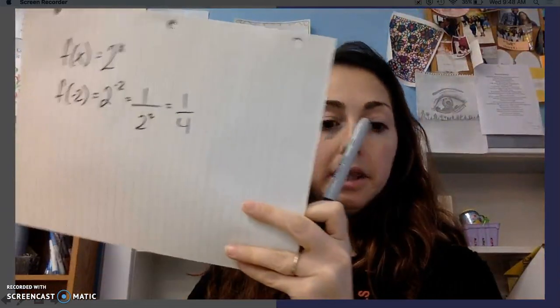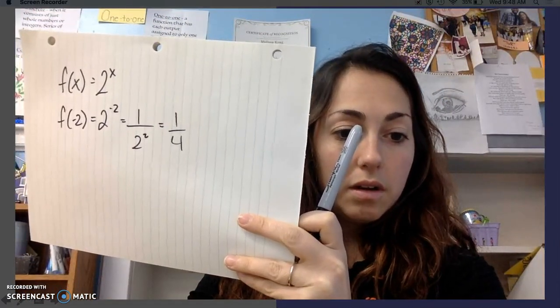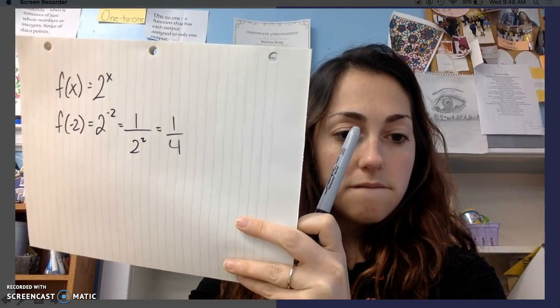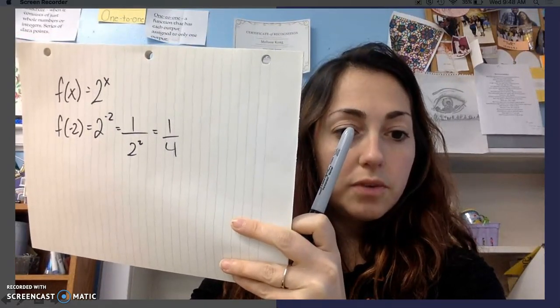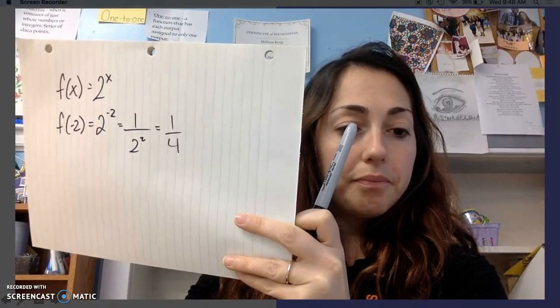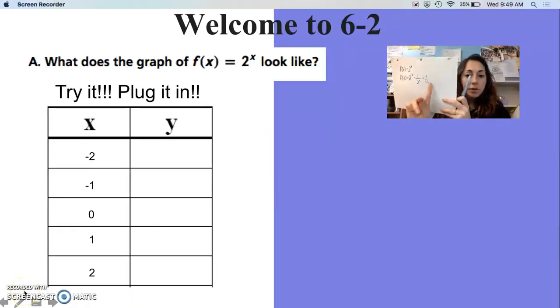When I plug in negative 2 for x, I get 1/4. So fill that in your table. Pause the video, fill in the rest, plot those points, and I'll show you what you get.